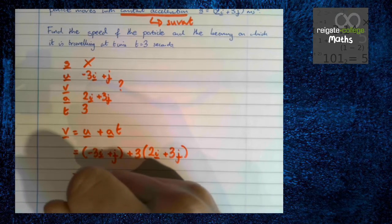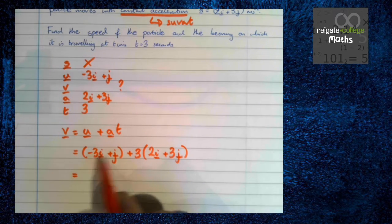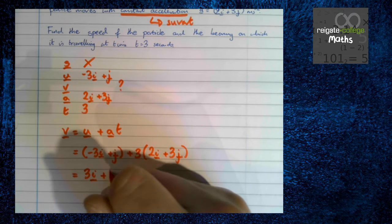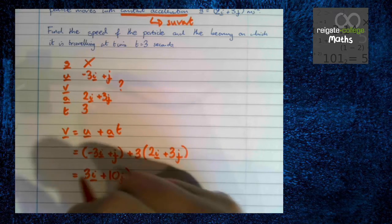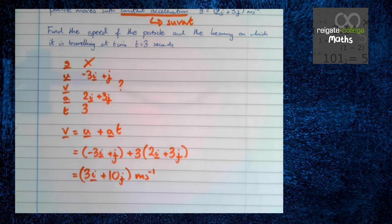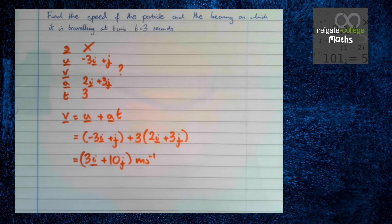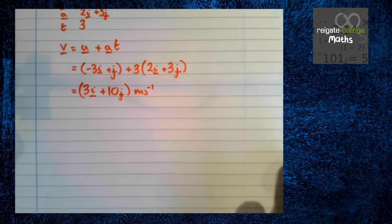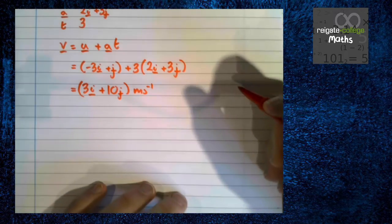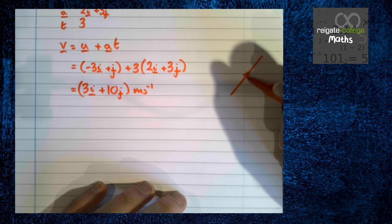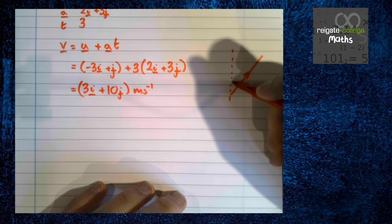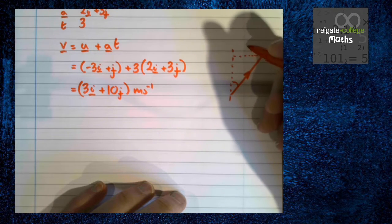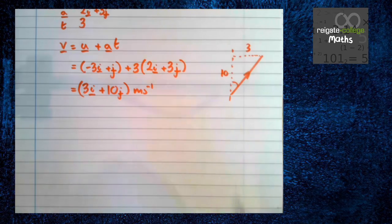Tidying all that up we get minus 3i plus 6i is 3i, plus j plus 9j so plus 10j meters per second. Okay, we haven't answered the question, we want the speed and the bearing. So let's just draw ourself a little diagram because that'll help with the bearing. We know we're going 3i 10j, we're going this way. The bearing is going to be this angle here. So we're going 3 across and 10 up, so that'll come in useful later.